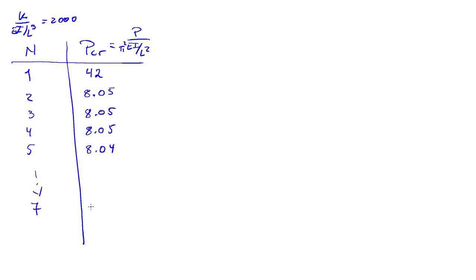And you can keep going here. Once you put in seven terms, this comes down to 8.03 and doesn't change thereafter. So we find that the critical load for the system, the actual critical load, is going to be 8.03 times the Euler load, so pi squared EI over L squared.